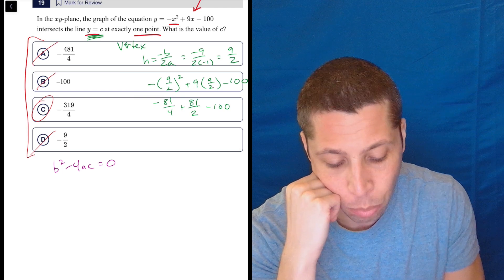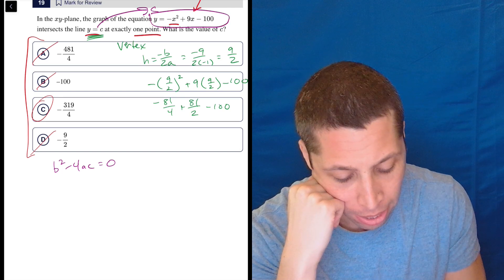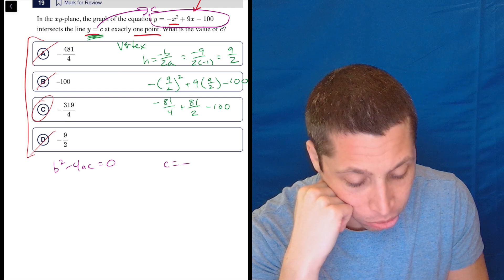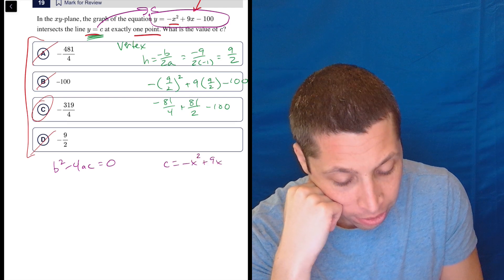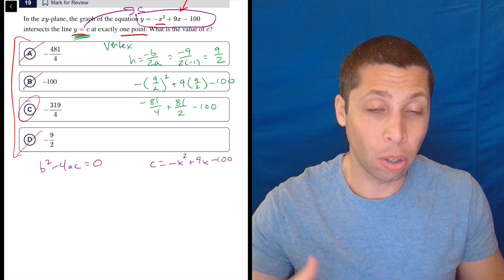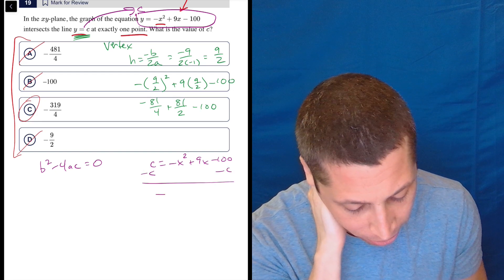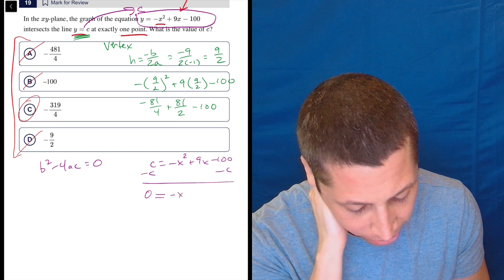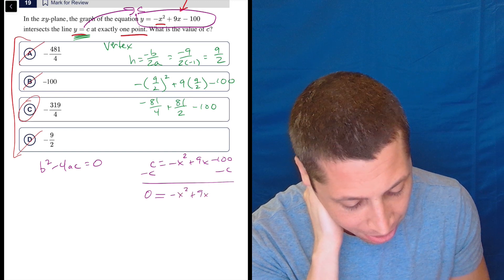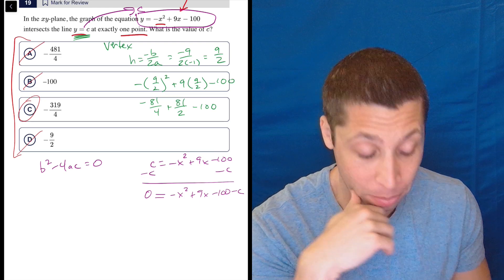The problem is we can't just use this equation. We've got to merge them. So we have to put that c in for y. But when we do that, we also have to then rearrange it so that it's equal to zero again, because the discriminant really only works when it's equal to zero. So I have to subtract the c, which gets kind of weird, because then I have zero equals negative x squared plus 9x minus 100 minus c.